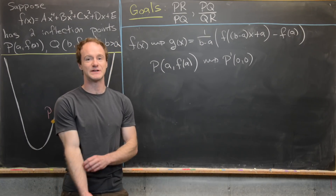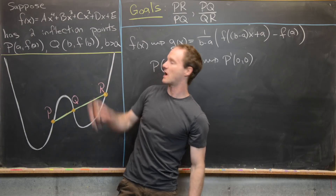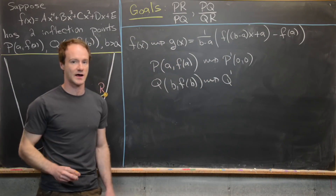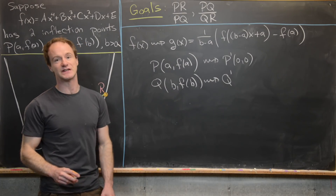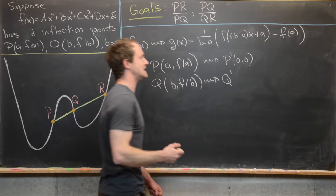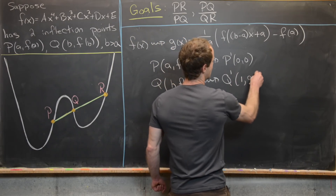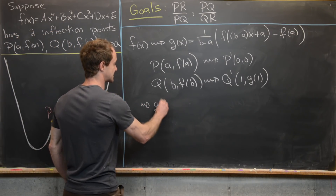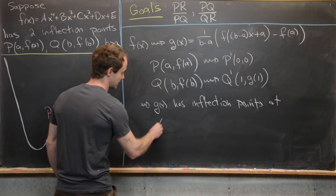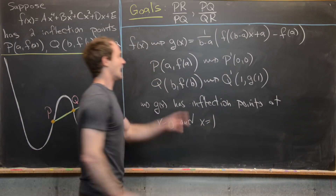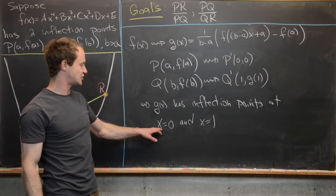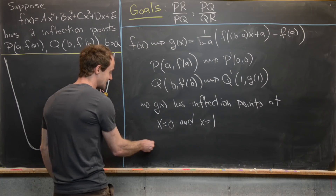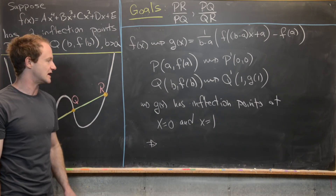Next, let's check what happens to the other inflection point Q at (B, F(B)). Plugging x = 1 into G gives B as the output, so the x-coordinate of Q is shifted to 1. The new point Q′ is at (1, G(1)). Therefore, G(x) has inflection points at x = 0 and x = 1, because our old inflection points at x = A and x = B have been shifted to x = 0 and x = 1 respectively.